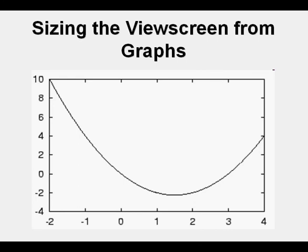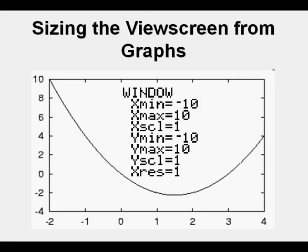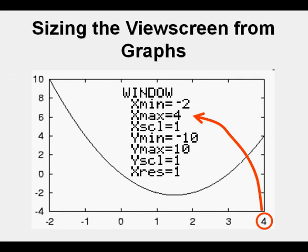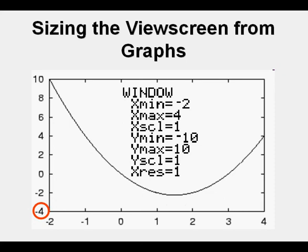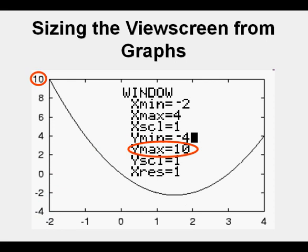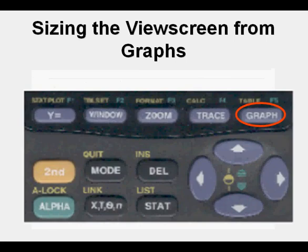Now we're going to emulate this first graph curve. We'll inset our window view to see how to change it to match the graph we're evaluating. First, we set x-min to negative 2 as shown on the graph. Then we change x-max from the standard 10 to 4. The x-axis units are 1 apart, so we leave x-scale at 1. The y-min value is negative 4, so we change y-min to negative 4. The y-max is already 10, so we leave it. The y-axis units are 2 apart, so we change y-scale to 2.